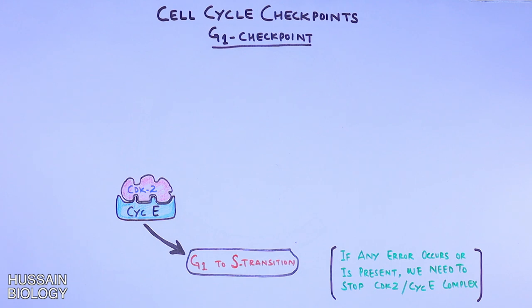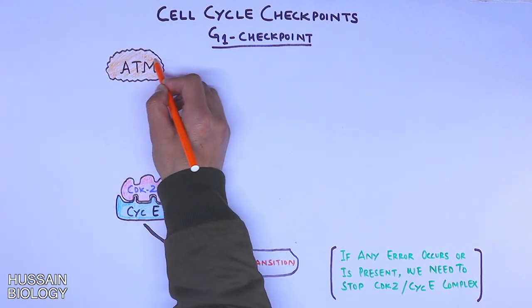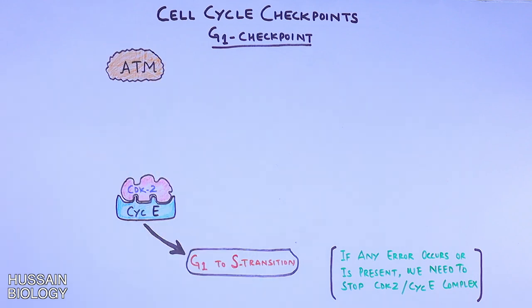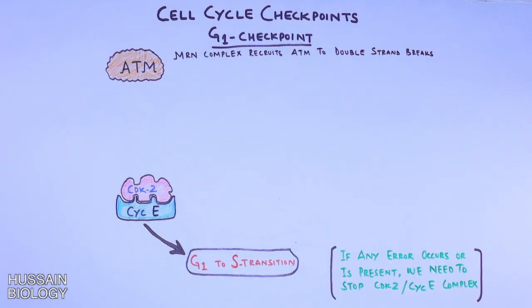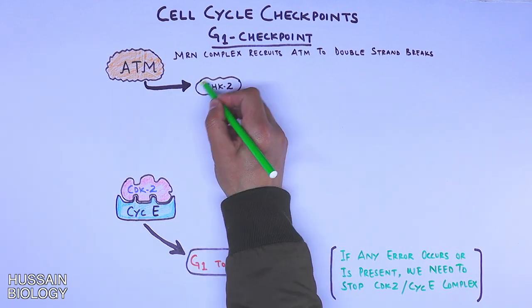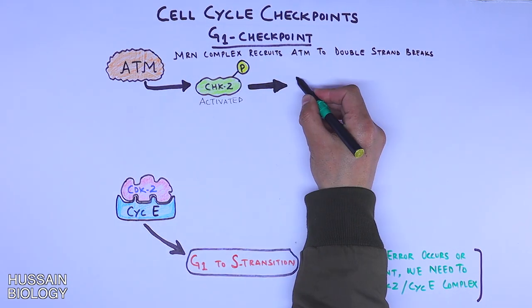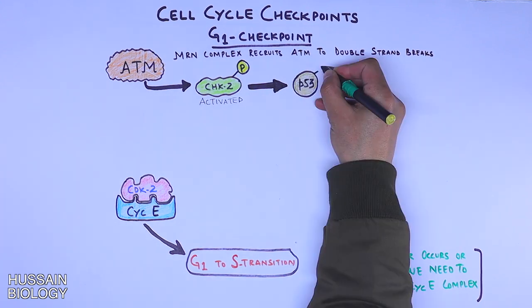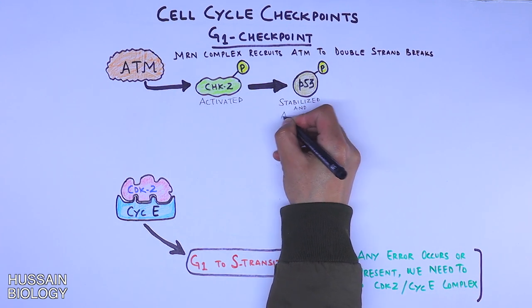When there is any kind of error or DNA damage, the ATM protein is recruited to the DNA and gets activated by the MRN complex, which recruits ATM to the double-strand breaks. The pathway then starts: ATM phosphorylates and activates the CHK2 protein.